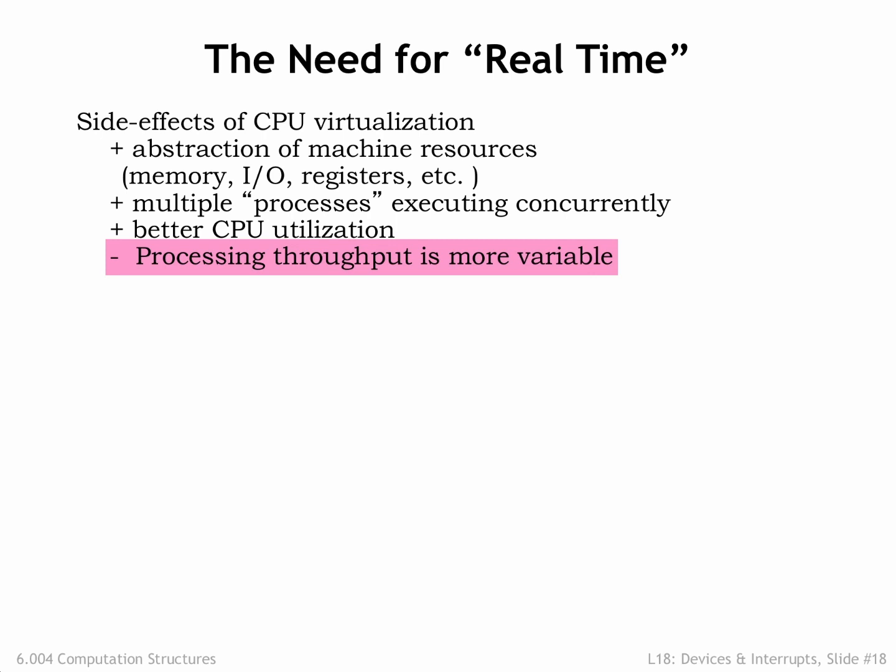The downside of timesharing is that it can be hard to predict exactly how long a process will take to complete, since the CPU time it will receive depends on how much time the other processes are using. We'd need to know how many other processes there are, whether they're waiting for I/O events, etc. In a timesharing system, we can't make any guarantees on completion times.